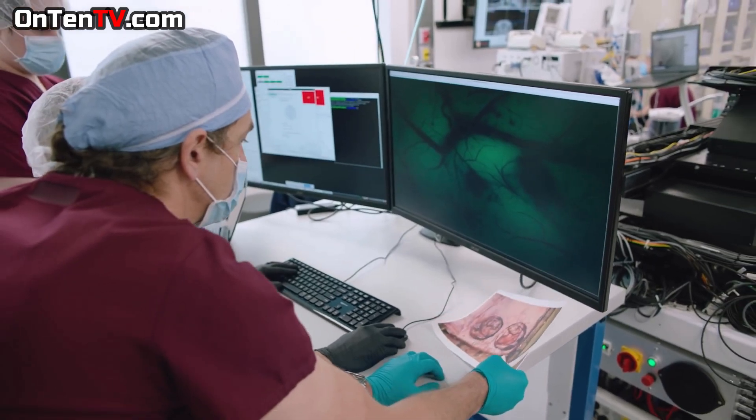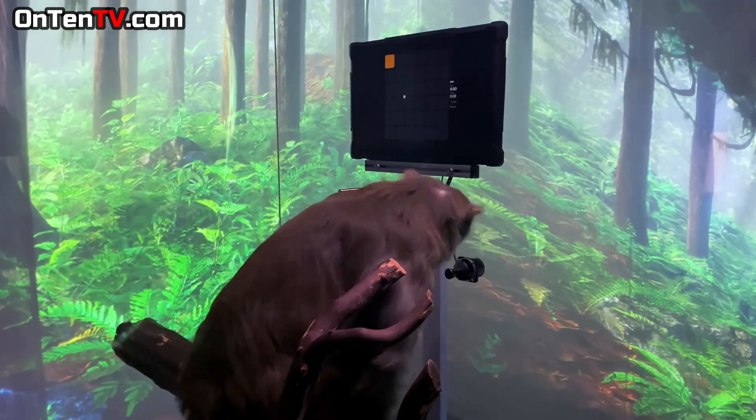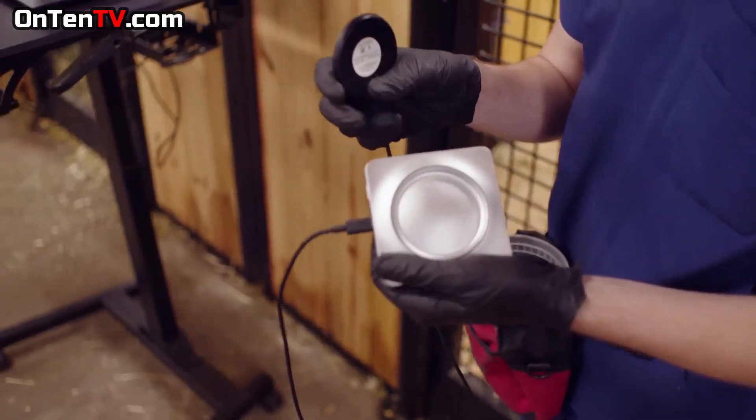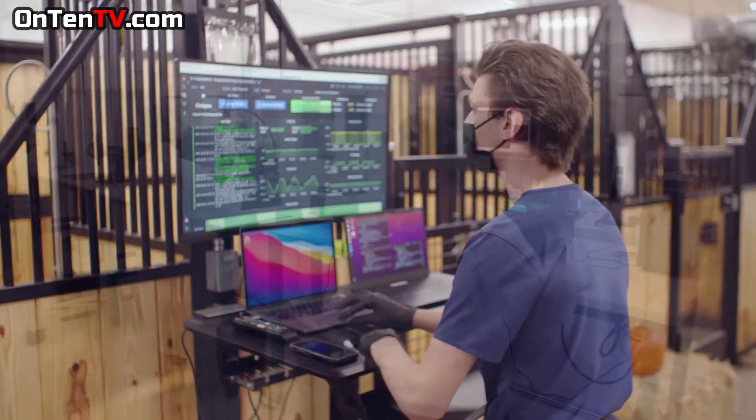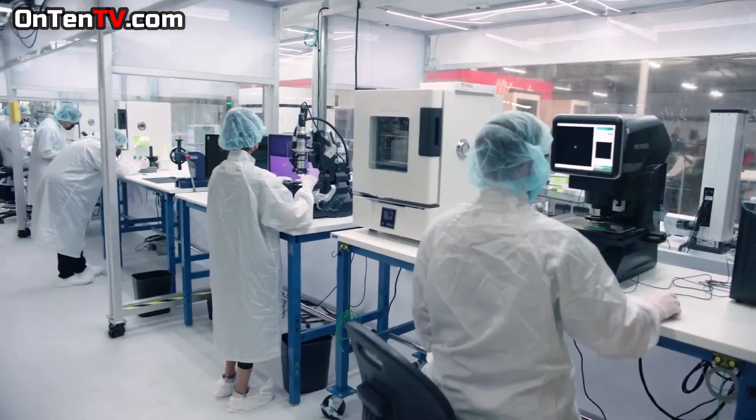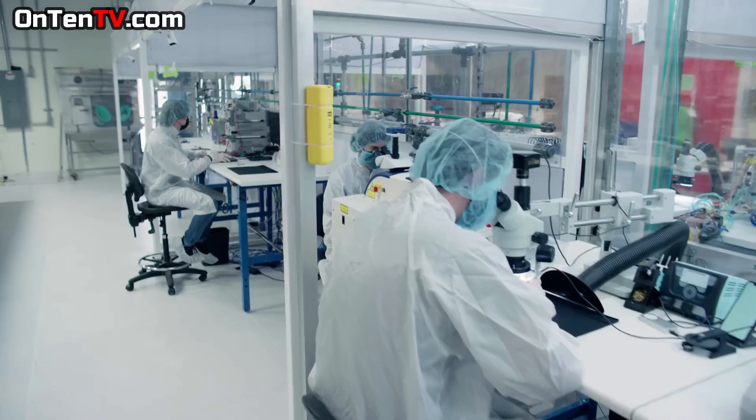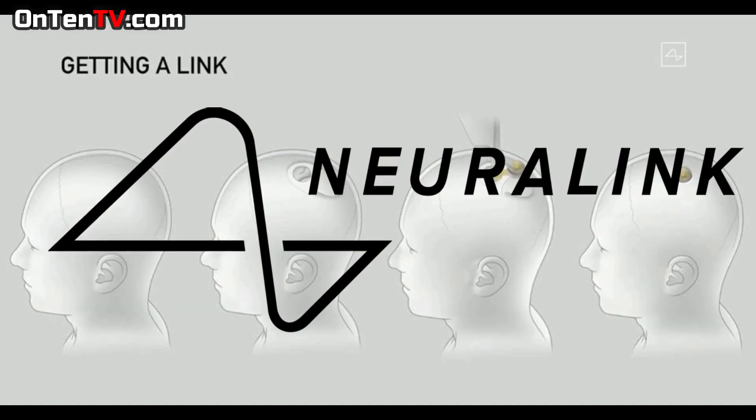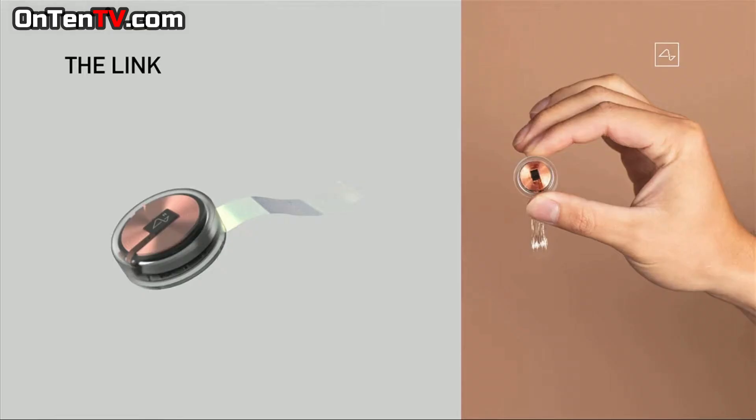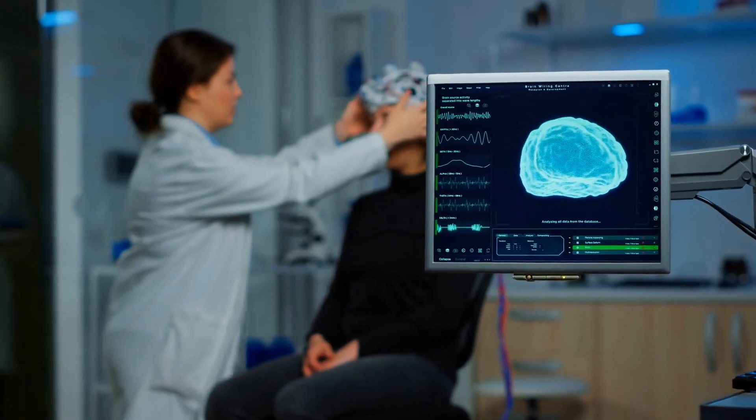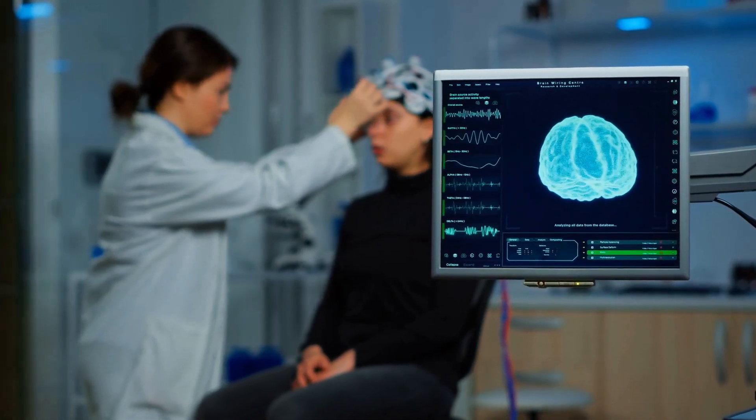Neuralink has used their chip on different animals including monkeys, but they are getting to a point where they want to use this brain chip on a human. Neuralink will be the first company to create a brain chip that will actually be fitted inside a human brain.